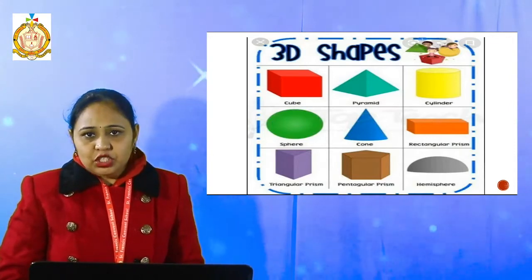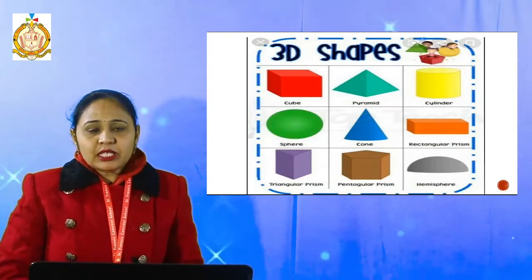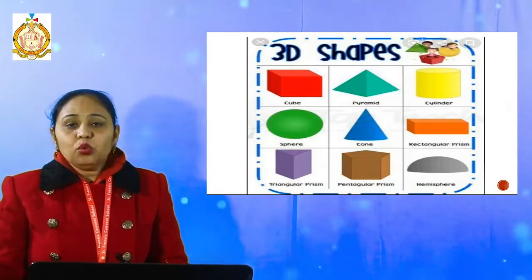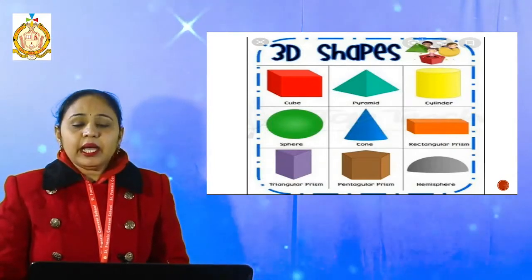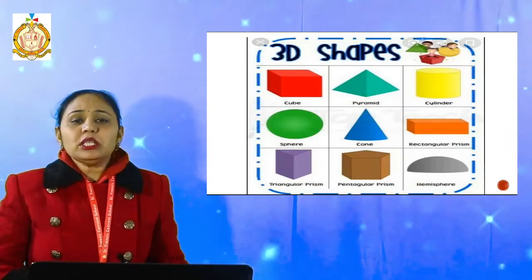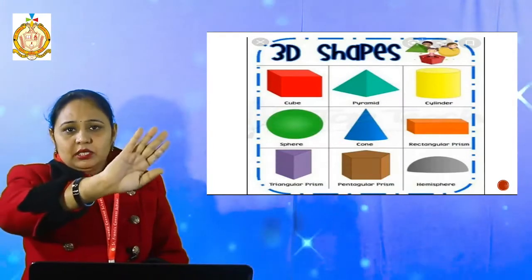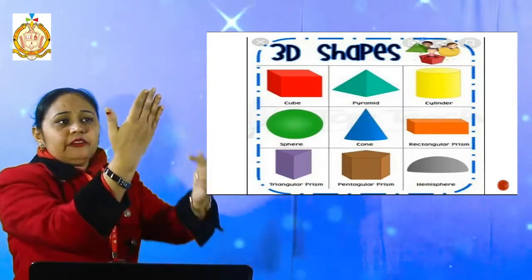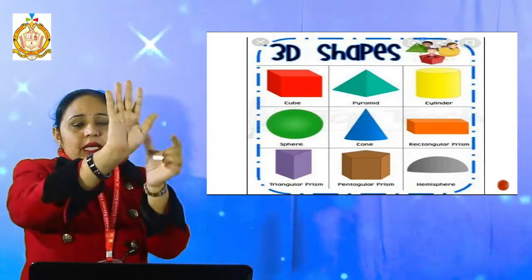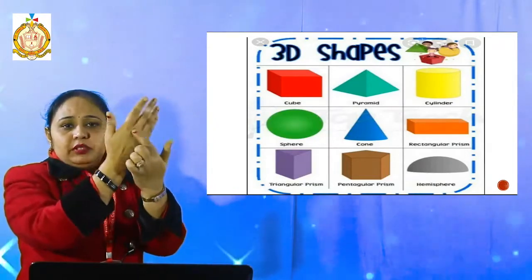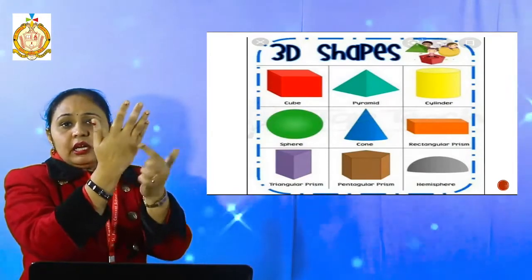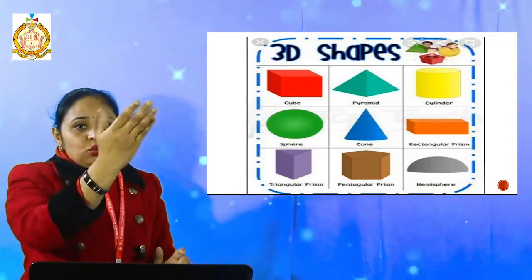Now first we have to identify the shapes. In this chapter we have to deal with the faces, vertices, and the edges. Now what is the meaning of faces? From my hand, I have a first face and another face on the other side — that means this hand has two faces. These are called the faces.